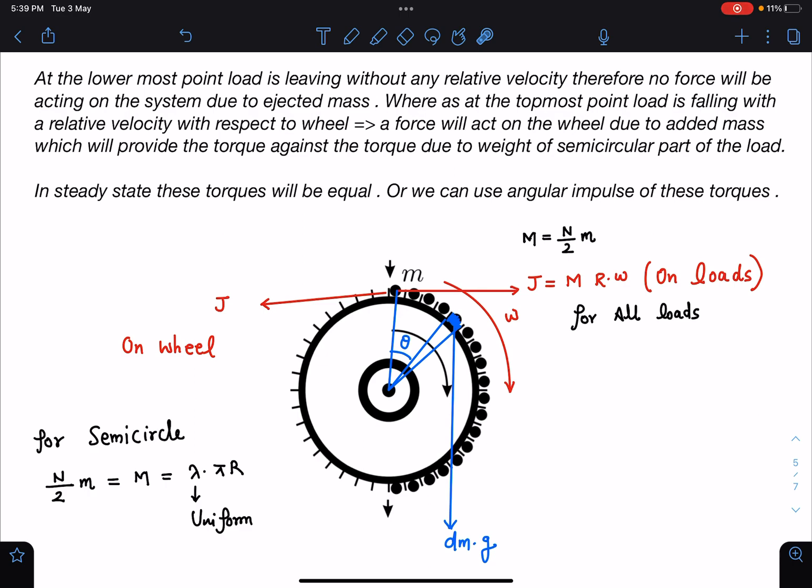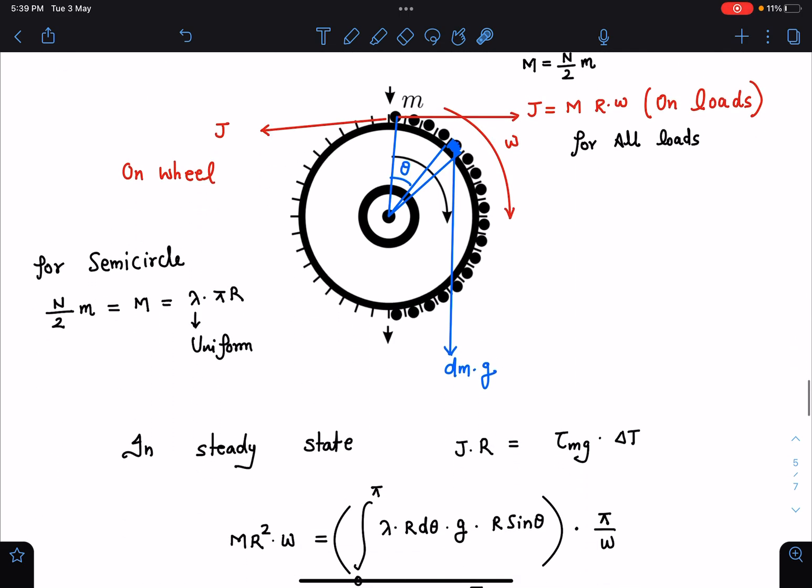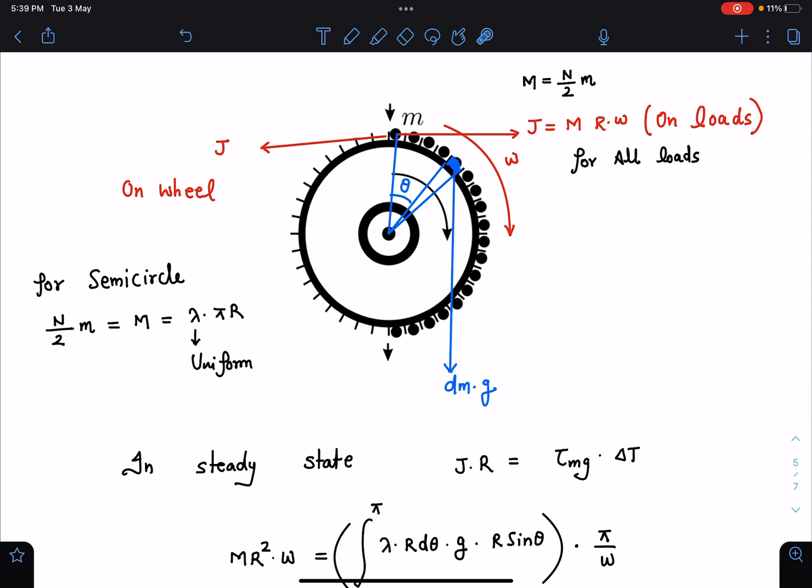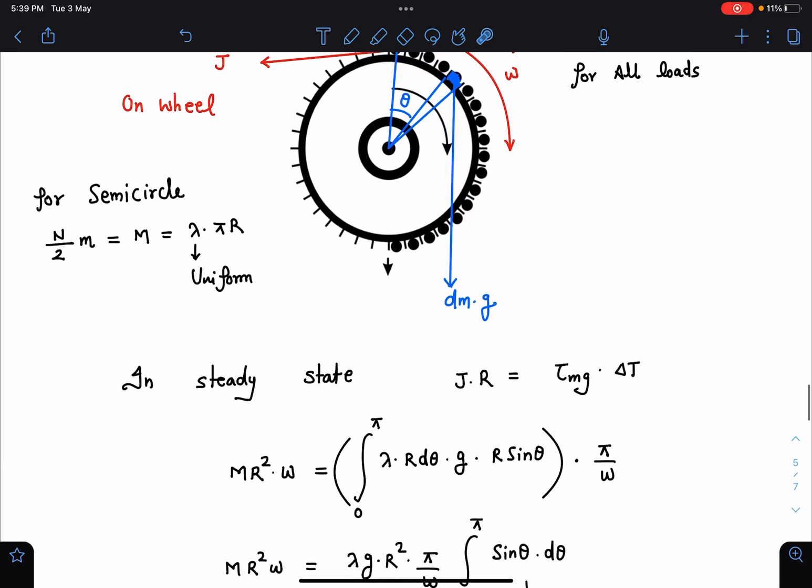From here you can say this J is mR omega, magnitude-wise. So in steady state, this J into R must be equal to impulse provided by mg. And torque due to mg we can say here it is different. So you can see here this is R sine theta, and this is dmg. So dmg into R sine theta. dm into g into R sine theta, 0 to pi we have to integrate. So 0 to pi we are integrating, and delta t time from here to here for this particle, that is pi/omega.